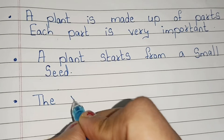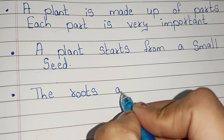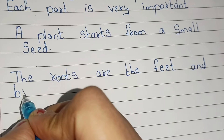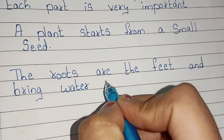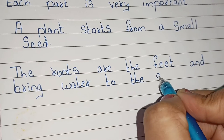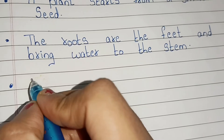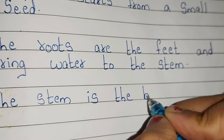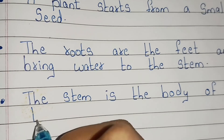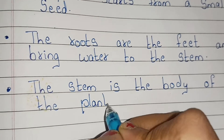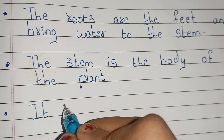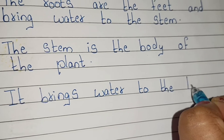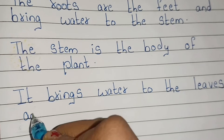The roots are the feet and bring water to the stem. The stem is the body of the plant. It brings water to the leaves and keeps the plant up.